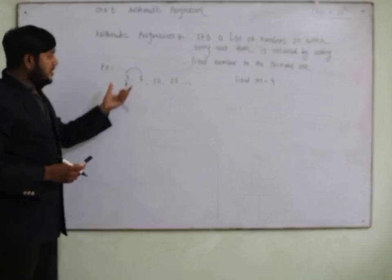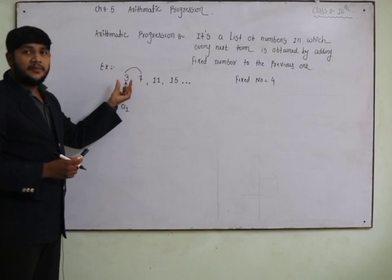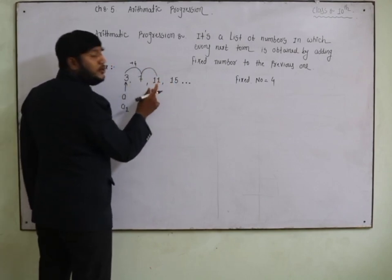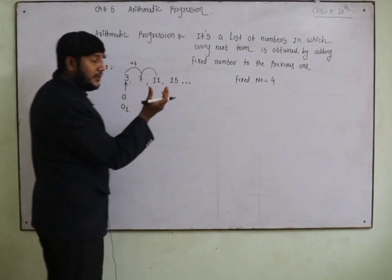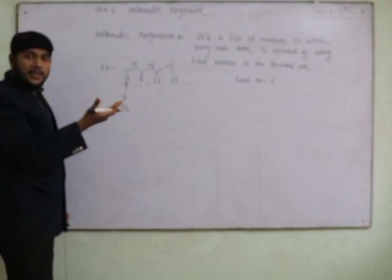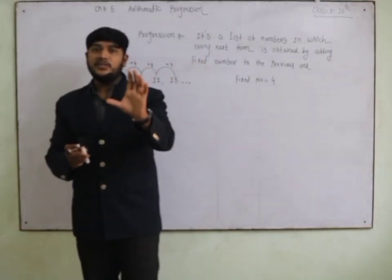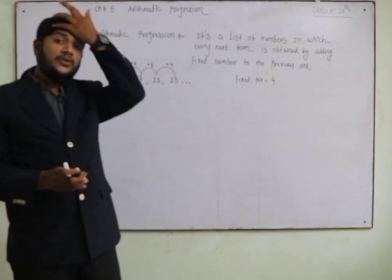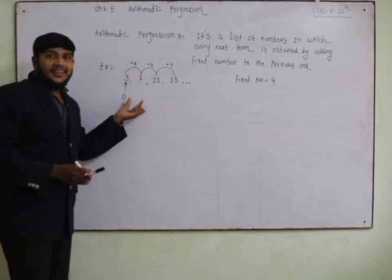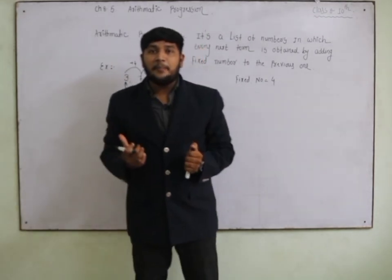Now observe the difference between consecutive terms: between 3 and 7 it is plus 4, between 7 and 11 it is again 4, between 11 and 15 it is again 4. If the difference is the same throughout, then we can call it an Arithmetic Progression.